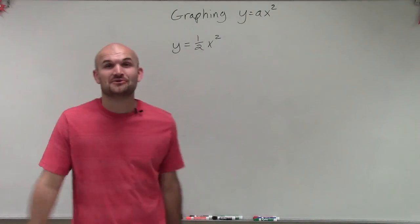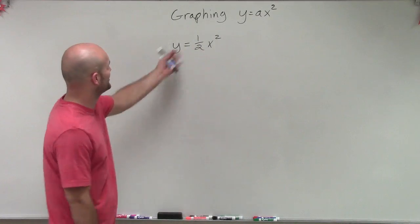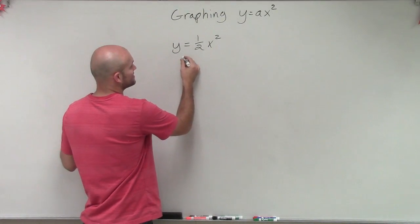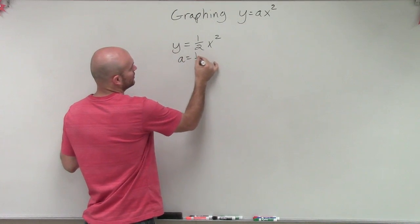So here I have graphing y equals ax squared. What I'm going to do in this case is we have y equals one half x squared, so therefore we can just simply say that a is going to equal one half.